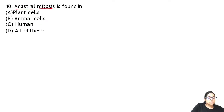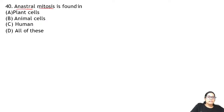Question 40: anastral mitosis is found in — anastral means spindle forms but the centriole-based aster arrangement is absent. Since plants do not have centrioles, anastral mitosis is found in plants. The answer is plant.